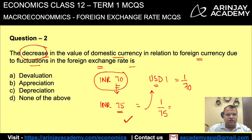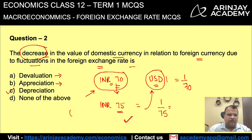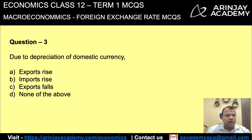This decrease is known as depreciation of the Indian currency compared to the US dollar. Devaluation is something which is done intentionally by the government. Appreciation is when the value of the Indian currency increases — for example, if instead of 70 rupees you could buy 1 dollar for 60 rupees, that means you need lesser rupees to buy 1 dollar, and that would be appreciation.